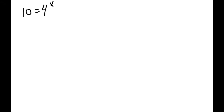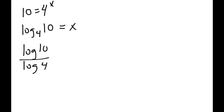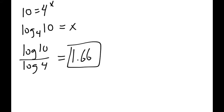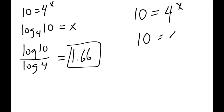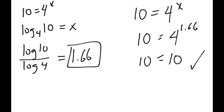Let's do one more. If I gave you 10 equals 4 to the x — we change it to log base 4 of 10 equals x. From there, we go log 10 divided by log 4, type that in on your calculator, and you get 1.66. If you're not sure you did it right, just go back to the original equation — 4 to the 1.66 on your calculator will show you it equals 10, confirming we did it correctly.